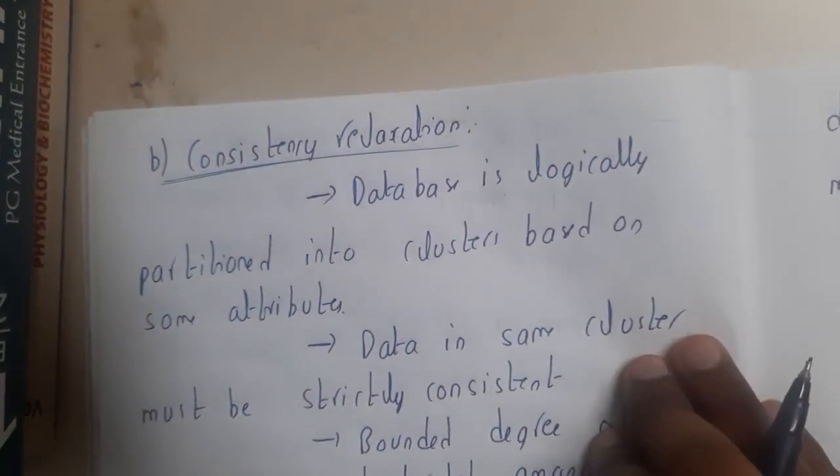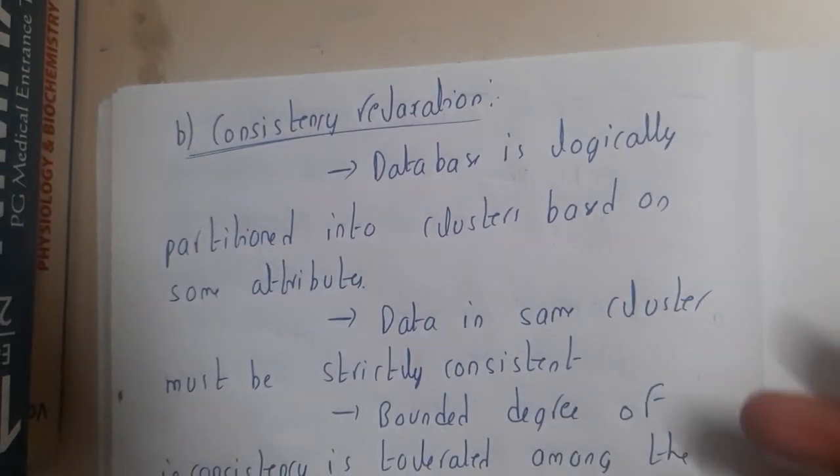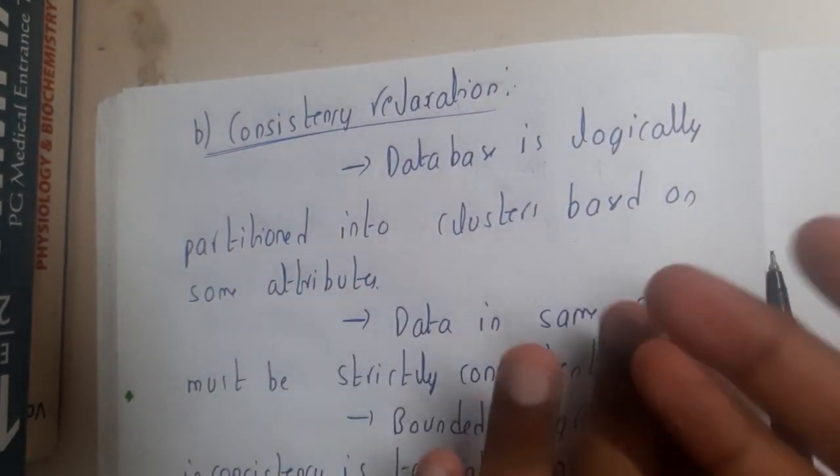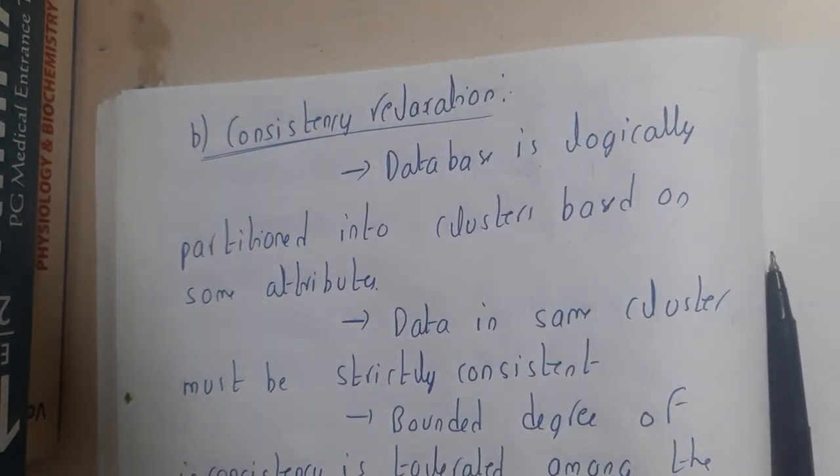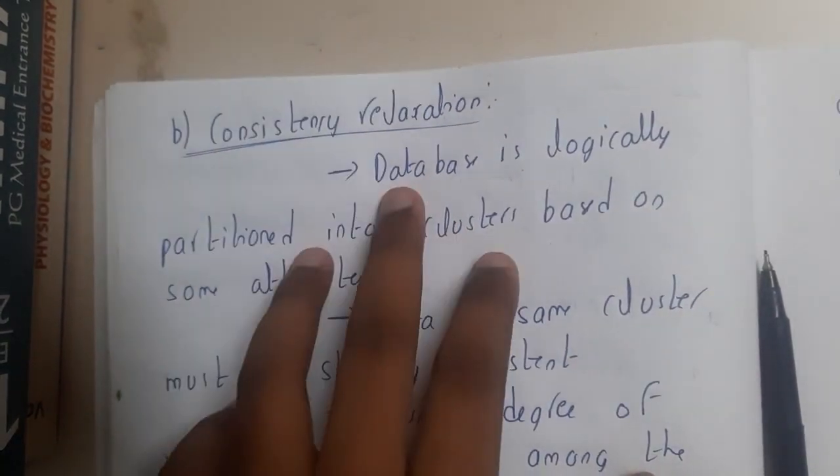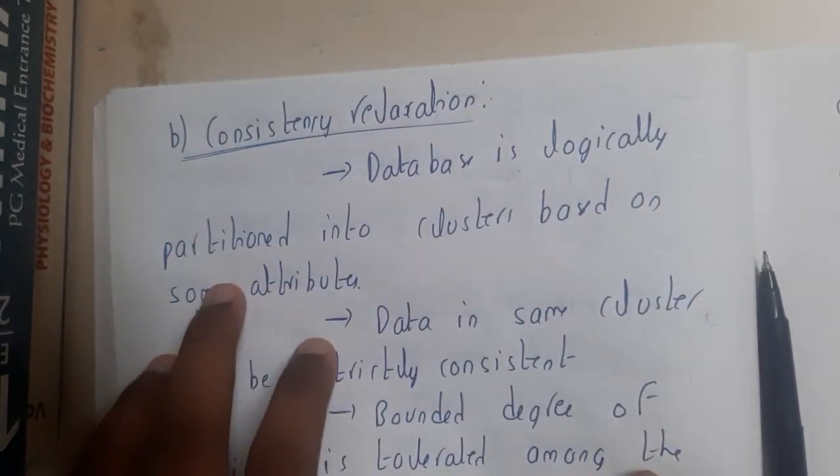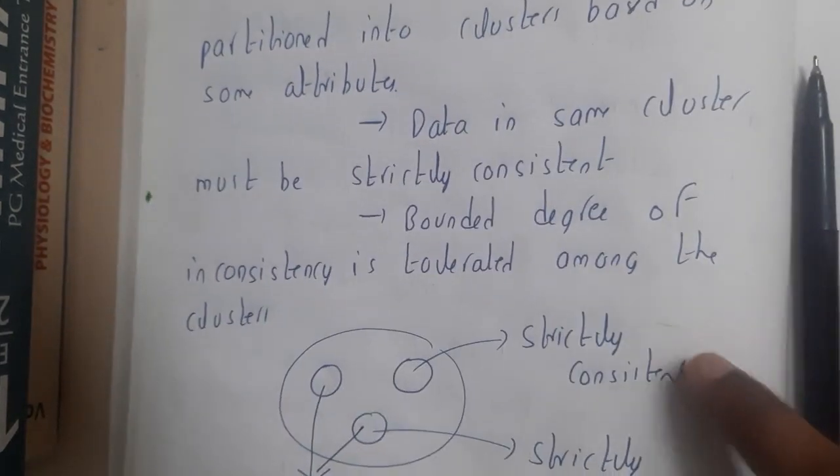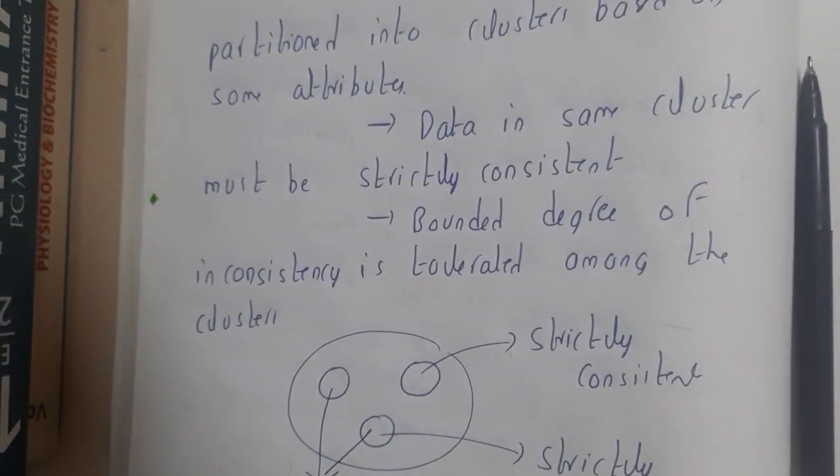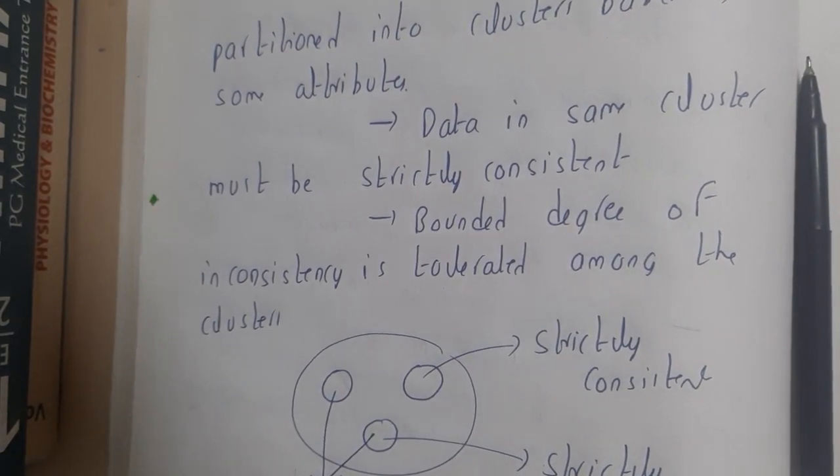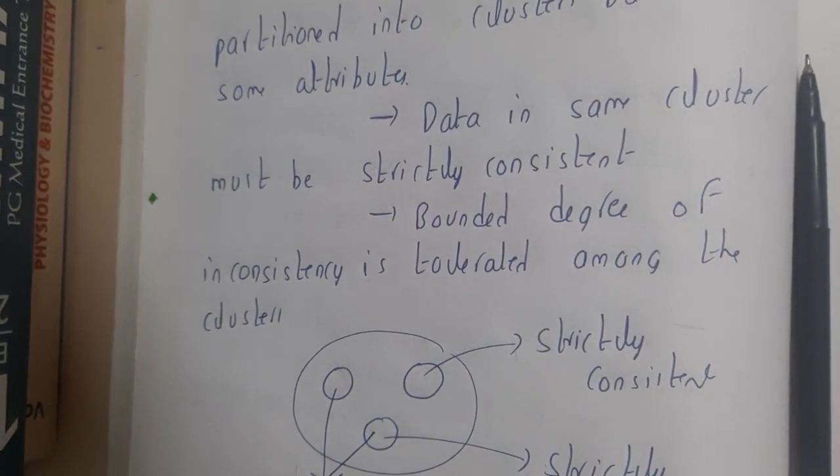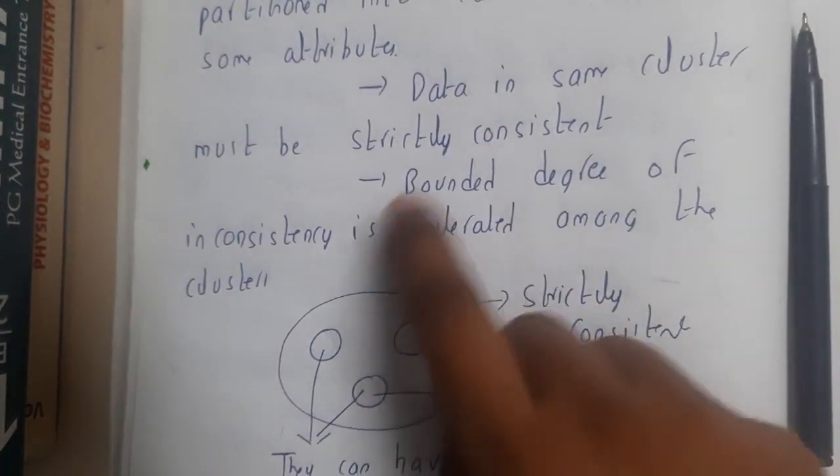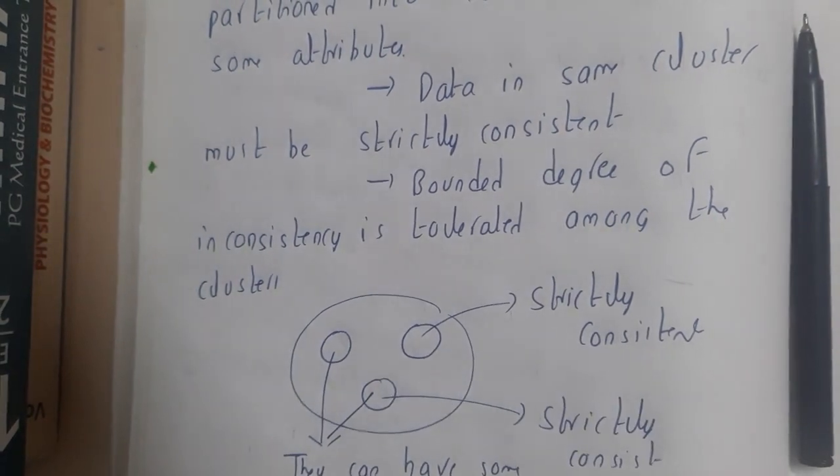The second thing is consistency. In normal transactions, consistency means before and after a particular transaction, the database should be in a proper way. Similarly here, the database is logically partitioned into clusters based on some attributes. If there is a large database in mobile computing, it might be in terms of your GPRS or anywhere something is stored. If there is a huge database, data is strictly clustered into some small amount modules.